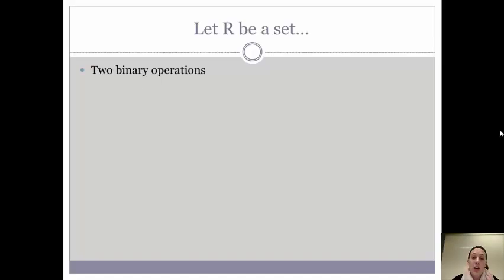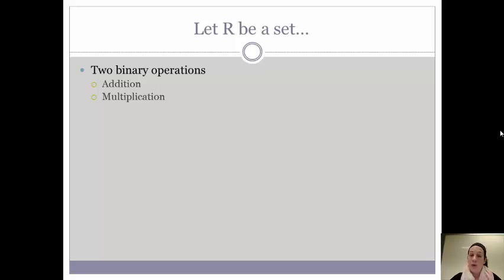So we're going to start by letting R be a set. On a set we need two operations defined. In our case we're going to have addition and multiplication. These two operations can be anything you really want them to be, but most typically they are addition and multiplication, so that's what we're going to work with today.